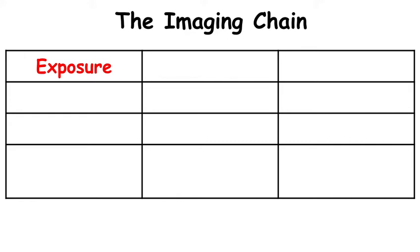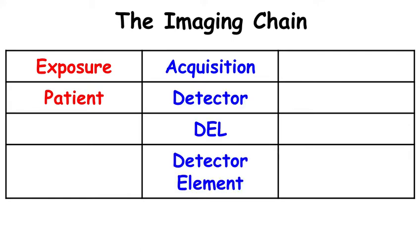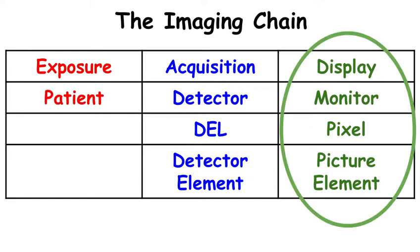We can imagine the imaging chain as three major categories. The first is exposure — we expose the patient, and some x-rays are scattered, some are absorbed, and some are transmitted. The next category is acquisition: those transmitted x-rays are captured on a detector, usually laid out in a matrix of detector elements called DELs. After image processing, we display our digital image on a monitor — a smartphone or computer workstation — as a matrix of pixels, which are picture elements. The focus of this talk is the digital image and display; we will not cover the matrix of detector elements.